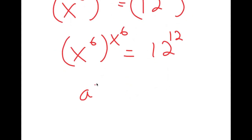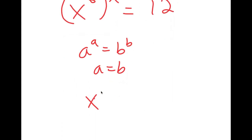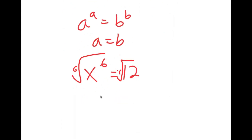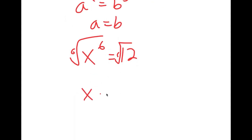And if I have something in the form a to the power of a is equal to b to the power of b, this means that a equals b. So in this case, x to the power of 6 is equal to 12. And if I take the 6th root on both sides, I get x is equal to the 6th root of 12.